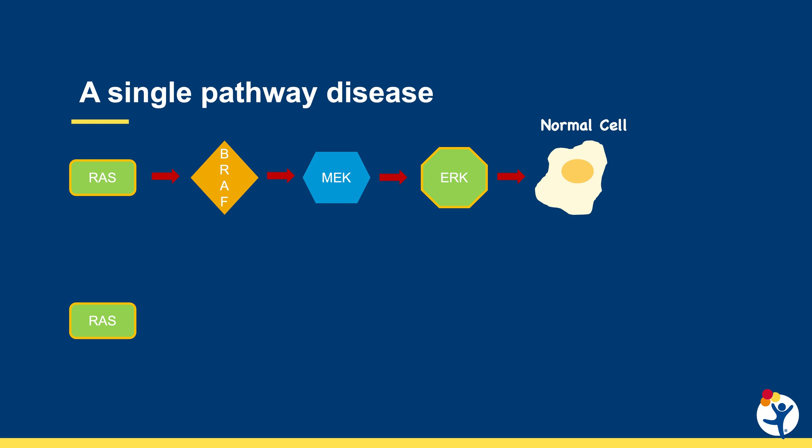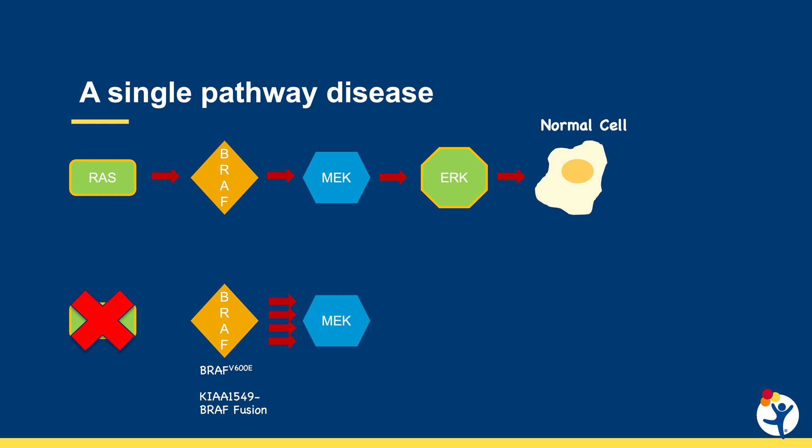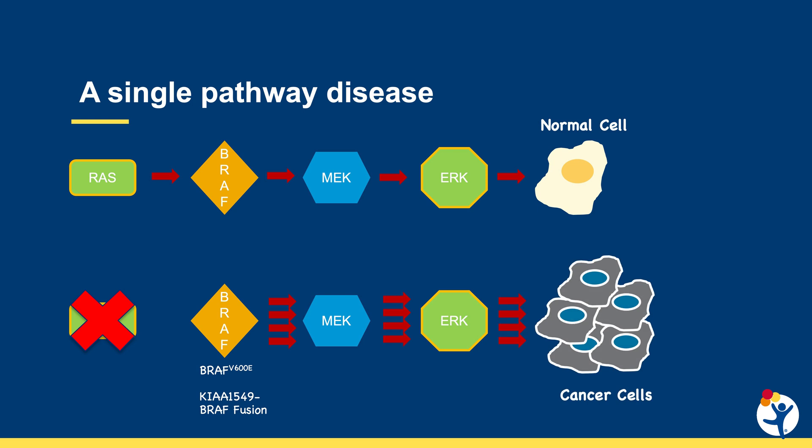What happens when you lose the RAS signaling? If you lose your master regulator signal because the proteins below it have a mutation or change that cause them to signal by themselves — in this case BRAF with either a BRAF V600E mutation or a KIAA1549 fusion, the two most common changes we see — all of a sudden BRAF is signaling by itself with nobody controlling it. This goes down to MEK, which continues to send signals down to ERK, telling the cells to grow. And in the end, this is what causes cancer cells to grow, with the tumor's signaling pathway all changed and disordered. We have to figure out ways to get these cells to stop growing.